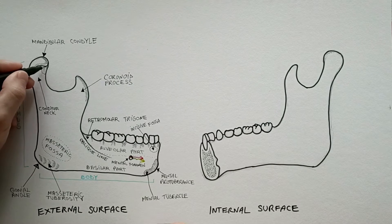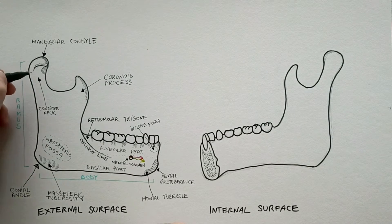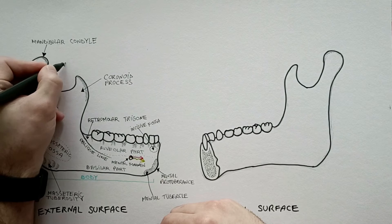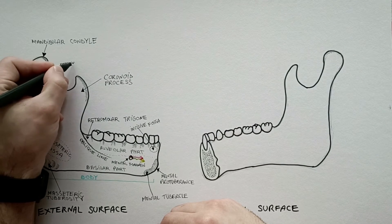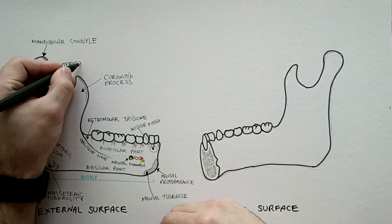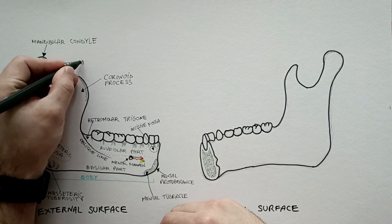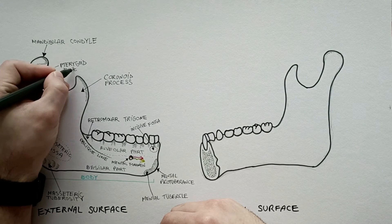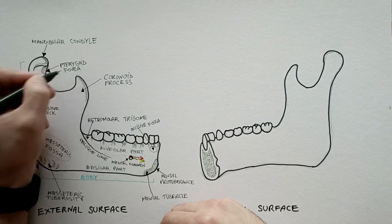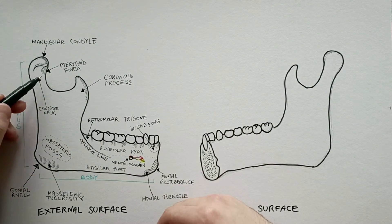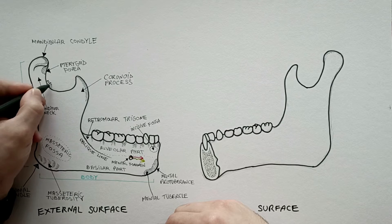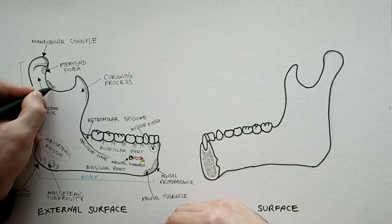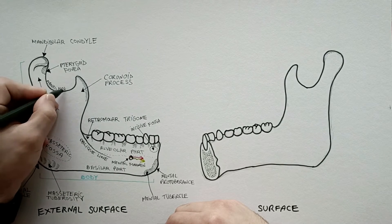Just below the articular surface of the condyle, the pterygoid fovea is present on the anteromedial surface of the condylar neck. At this level, the head of the lateral pterygoid muscle attaches. The mandibular notch is the notch between the condyle and the coronoid process.